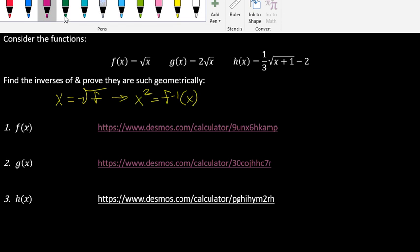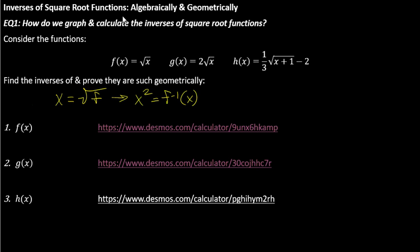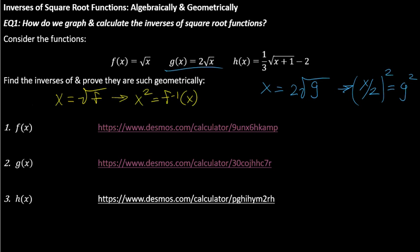So let's look at g and h. I'll do g in blue. If g of x equals two times the square root of x, when I do the flip I'm going to have two times the square root of g equals x. I divide by two on both sides to get x over two, then square both sides, and I end up with g inverse of x equals x squared over four.